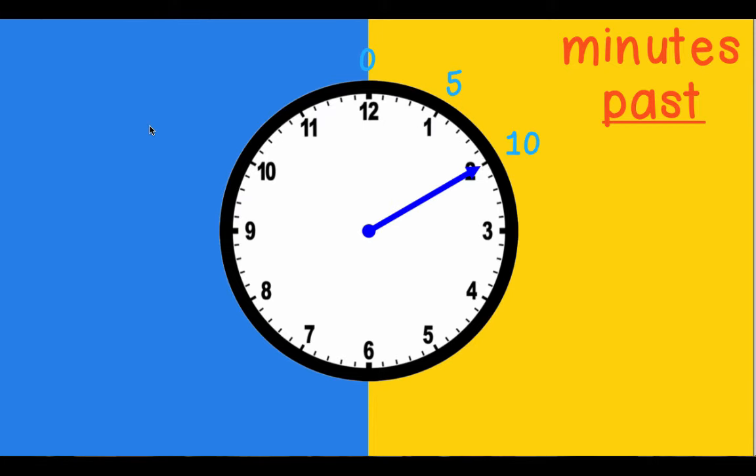So when we reach the two, the two actually represents 10 minutes past the hour. 15 minutes past, 20, 25 and 30 minutes past. We've looked at previously in the previous video that this is actually half past because we moved halfway around the clock.